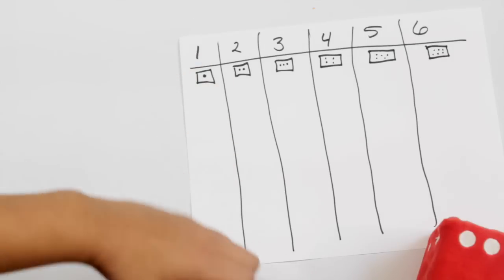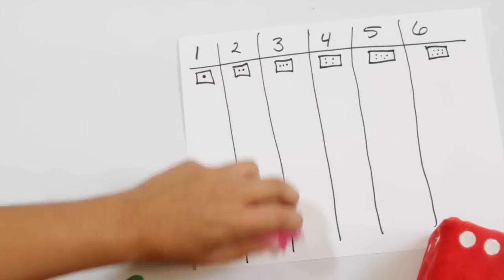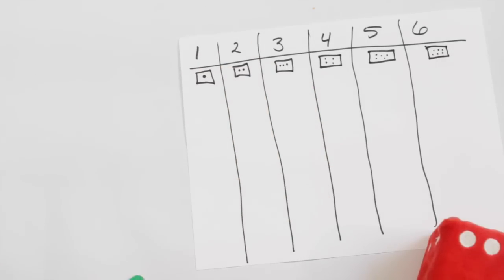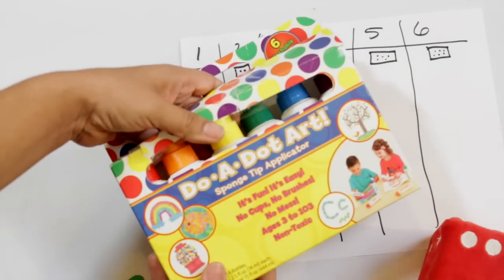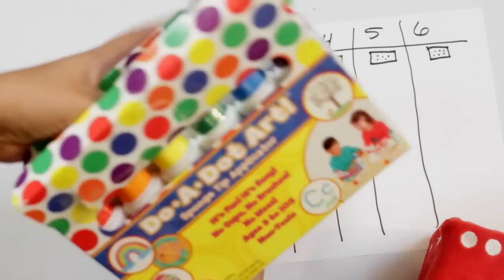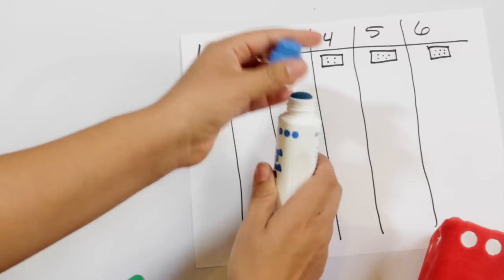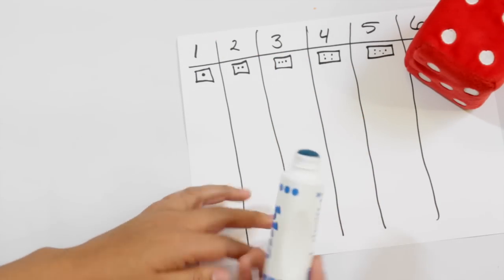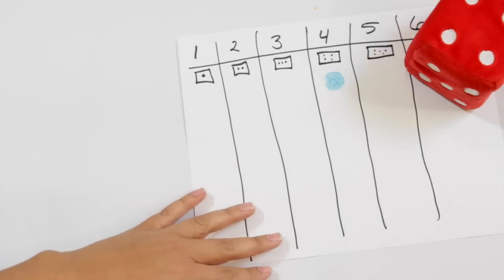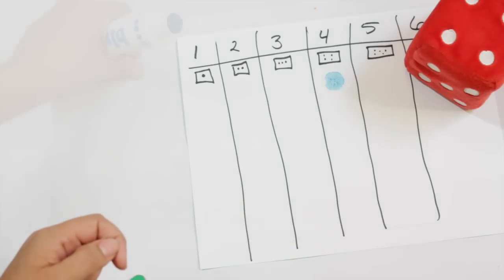Another fun way is to involve those markers, those do-a-dot markers. So these are also at the Dollar Tree, but this is the name brand kind called Do-A-Dot. They look like this and they're basically like a bingo marker. And you can roll the die, it's a number four, and so you tally that way by making one dot on the four.